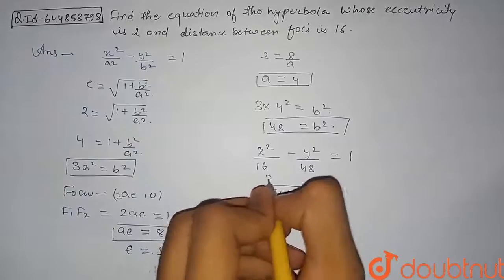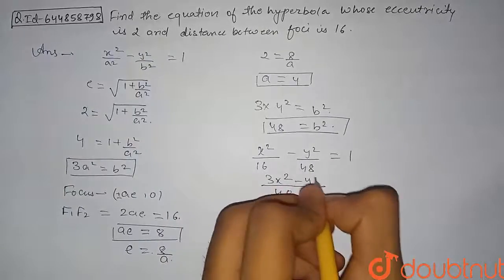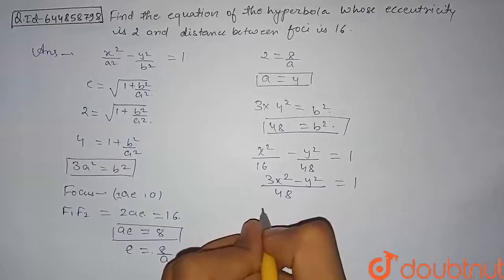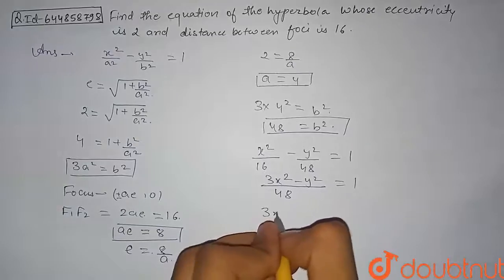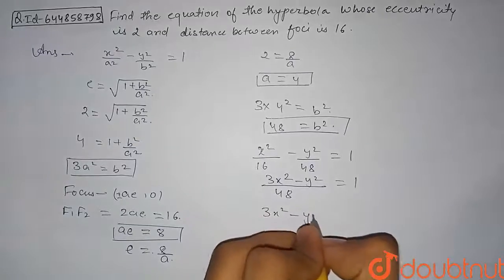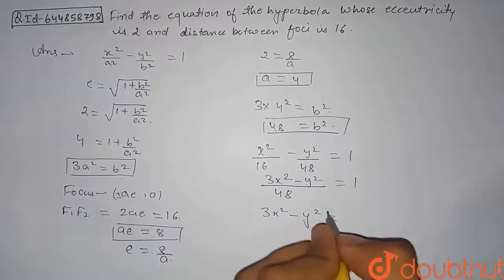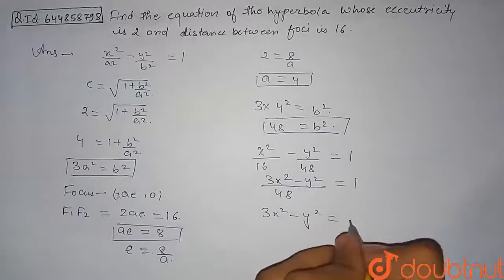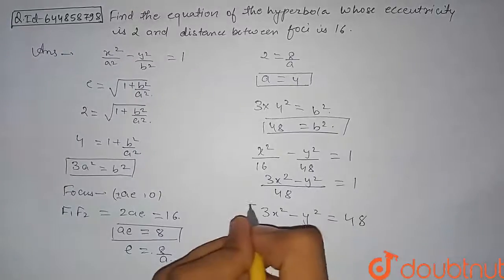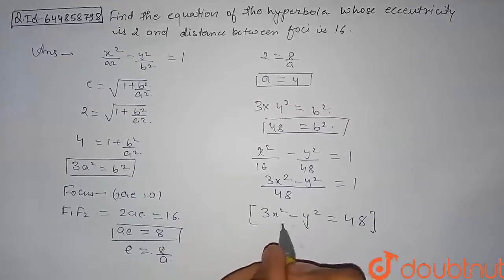Taking LCM of 48: 3x² − y² = 48. So the required answer — the equation of the hyperbola — is 3x² − y² = 48.